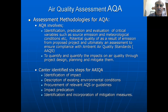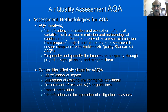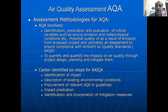We quantify and qualify the impacts on air quality through project design, planning, and mitigation. Once we predict and assess the impact on air quality, we try to see how the impact can be mitigated through better planning and mitigation strategies. Kencher, a very expert in environmental assessment, identified five or six parameters: ambient air quality identification and impact, description of existing environmental conditions as a baseline before the project, procurement of relevant environmental air quality standards, then impact prediction, and finally identification and operation of mitigation measures.